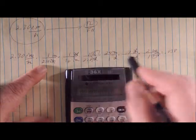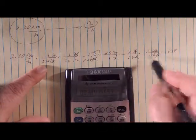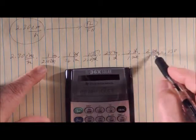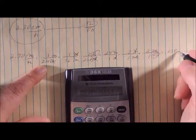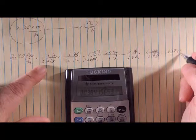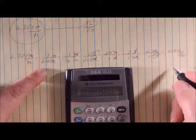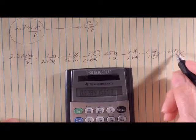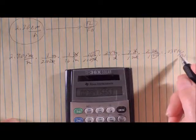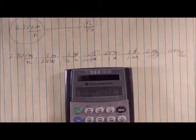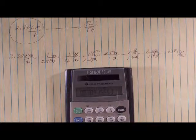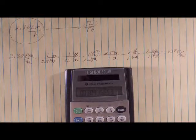Those are the only two units that didn't factor out, furlongs per fortnight. So that's our answer, furlongs per fortnight. So the speed of our snail is .038 furlongs per fortnight. There's your answer, found using dimensional analysis, just like magic.